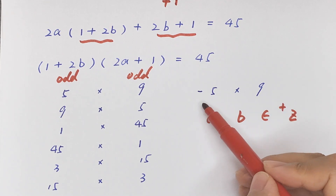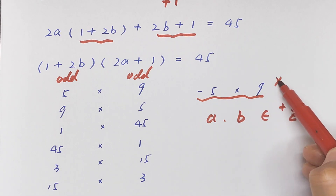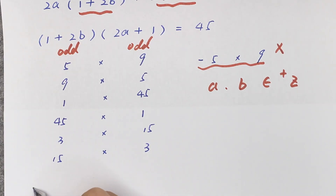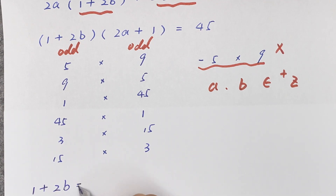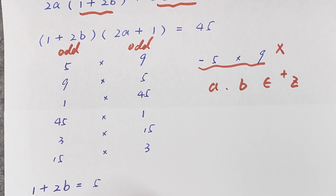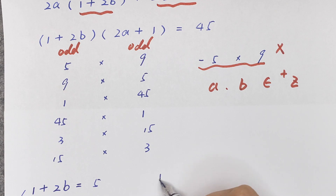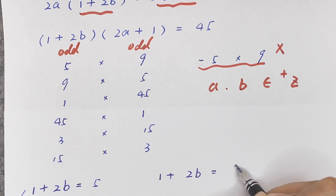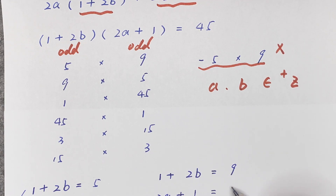Since a and b are positive integers, we consider the valid cases. Either (1 + 2b) = 5 and (2a + 1) = 9, or (1 + 2b) = 9 and (2a + 1) = 5.